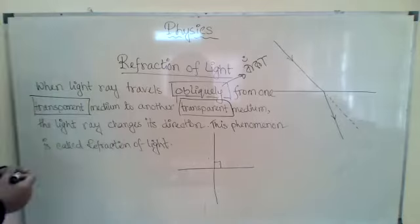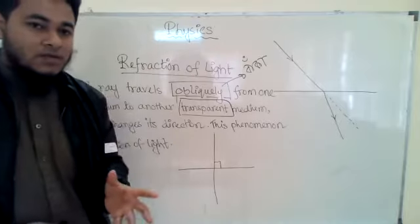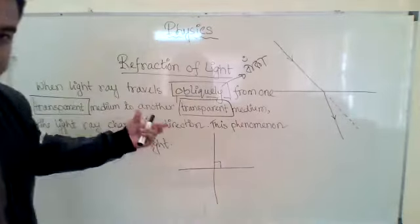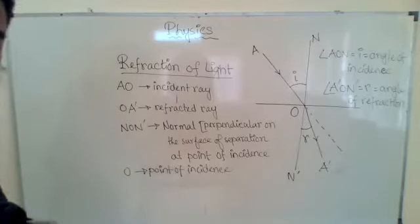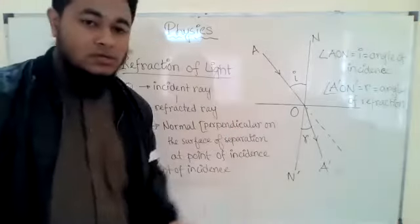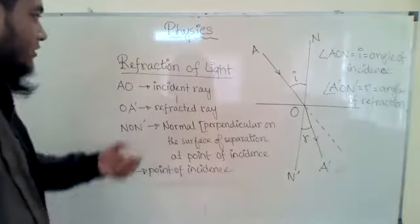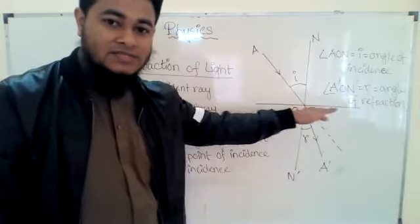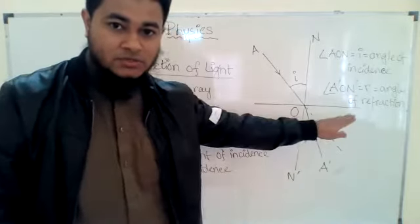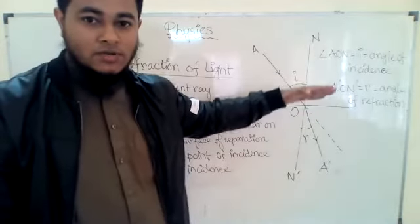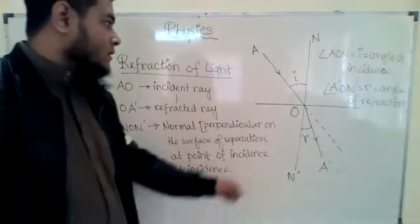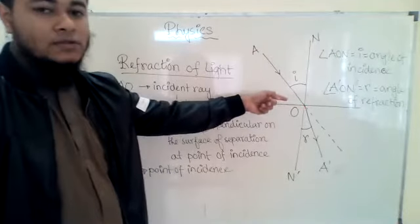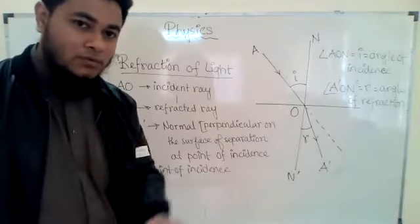Now we will go through the two laws of refraction. Just as in the chapter on reflection of light we had two laws, here also we have two laws. Before the laws, let us introduce the terminologies. There is one incident ray — the light ray coming from the first medium and falling on the surface of separation. Point O is the point of incidence. AO is the incident ray, and we draw a normal — a perpendicular on the surface of separation at the point of incidence — labeled NON'.